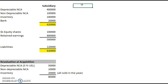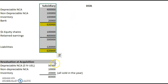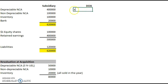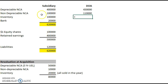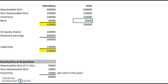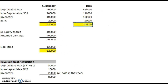What we're going to do is a simple recasting of the balance sheet at the date of acquisition. We just simply add the adjustments where appropriate. So depreciable non-current assets is 400,000 plus 50, non-depreciable is 100 plus 10, inventory is another 100 plus 20, and bank stays as bank. That gives us a total of 700,000 — 620 plus 80 equals 700.